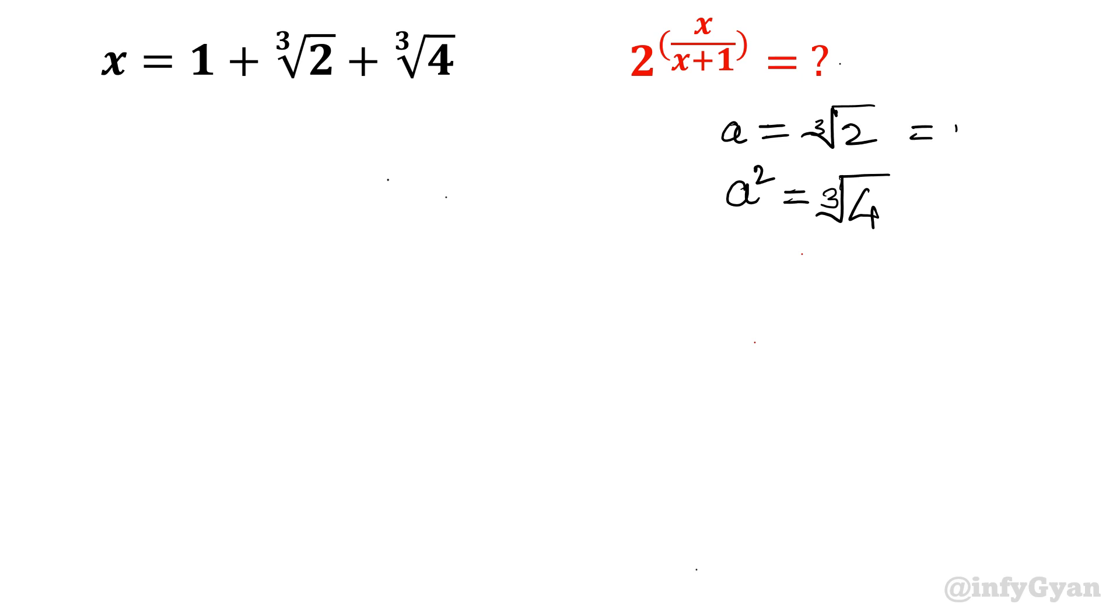You can understand from here it is 2 raised to the power 1 over 3. If I will take square of that then it will be 2 raised to the power 2 over 3. Anytime I can write 2 raised to the power 2 power 1 over 3. So it is 4 raised to the power 1 over 3. That is why a is equal to cube root 2 then a square will become cube root 4.